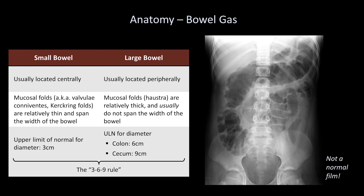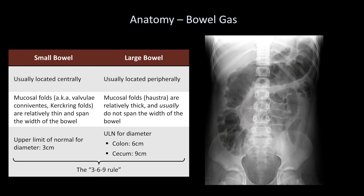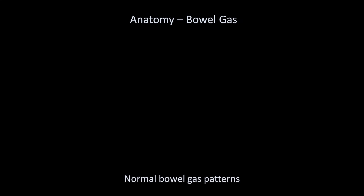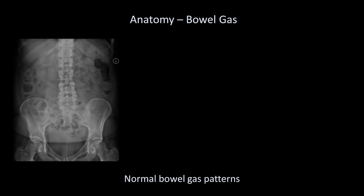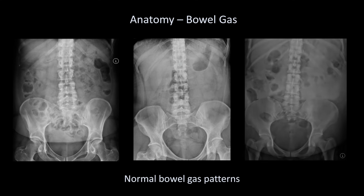This film is not a normal abdominal film, but rather shows toxic megacolon in a patient with inflammatory bowel disease — it is a particularly good example of the central versus peripheral bowel distribution. One of the most challenging things about the interpretation of abdominal films is that the range of normal is subjectively much wider than it is for chest films, and therefore it takes viewing many more abdominal films to feel comfortable distinguishing normal from abnormal.